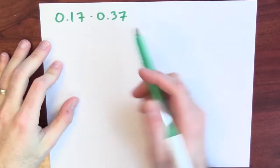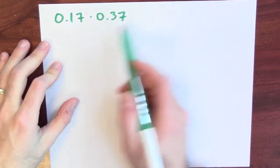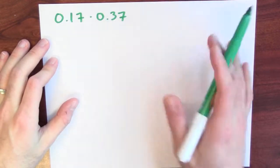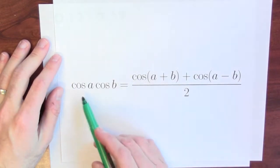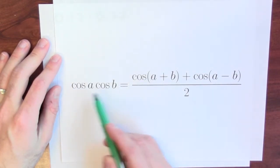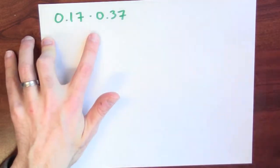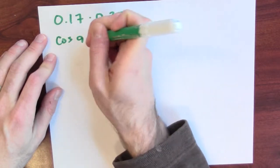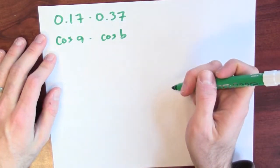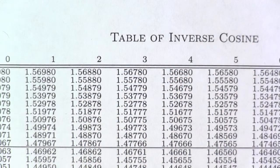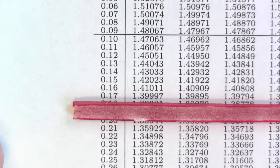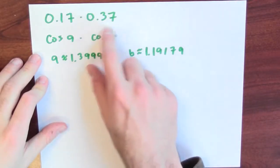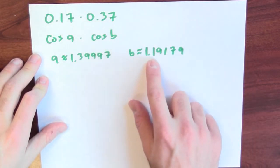So let's try to use this trick to multiply 0.17 and 0.37. Now these numbers are so small you could just multiply them out, but it'll demonstrate the trick that would work on more complicated looking numbers. The formula that we're trying to use is this cosine a times cosine b formula. I can only multiply together cosines, so I should rewrite 0.17 and 0.37 as cosine a and cosine b. If I look at my table of inverse cosine and I look up 0.17, I find that cosine of 1.39997 is close to 0.17.